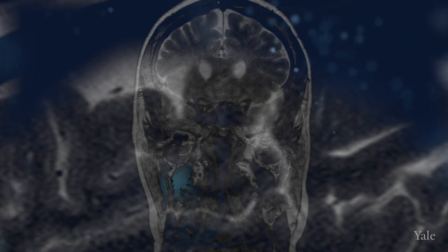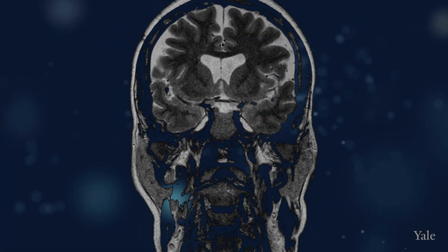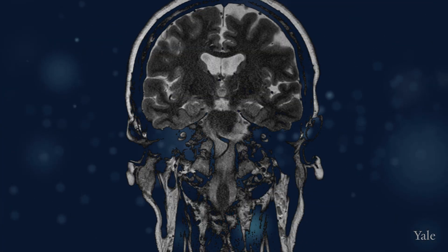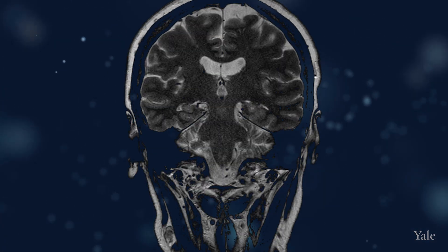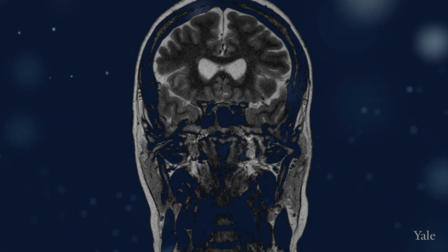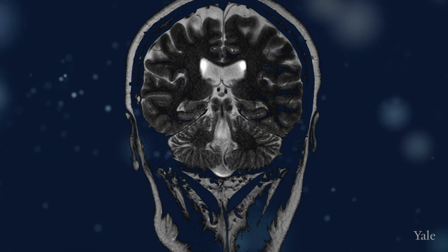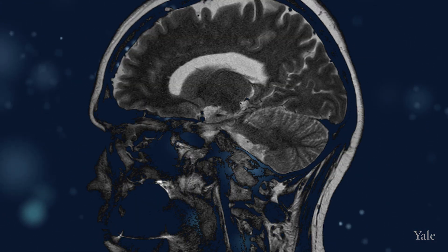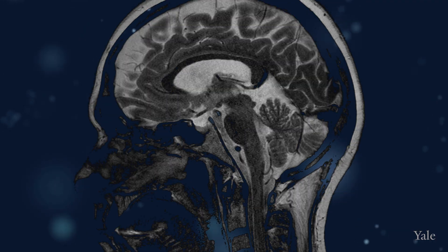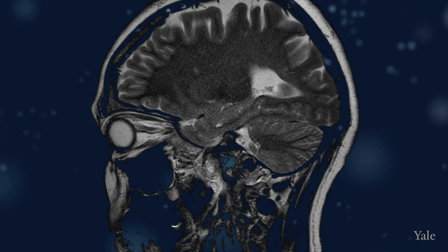Our lab is interested in two axes around that typical patient we picture. One is the axis of preclinical disease or vulnerability — before that patient develops those symptoms, she may have some pathology in her brain, and often does. Pathology usually precedes evidence of clinical illness by 10 or 20 years.